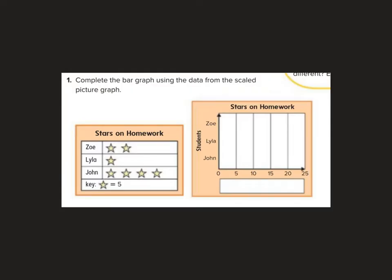Complete the bar graph using the data from the scaled picture graph. So always first thing I'm going to do, check this key. Each star is worth five. Each number line on the bar graph is worth five. What are these numbers? Number of stars, right? Number of stars on the homework. So we have stars on the homework. These are the students, and these numbers represent the number of stars.